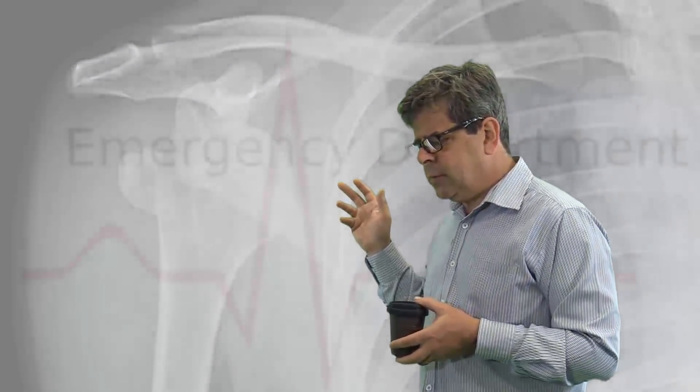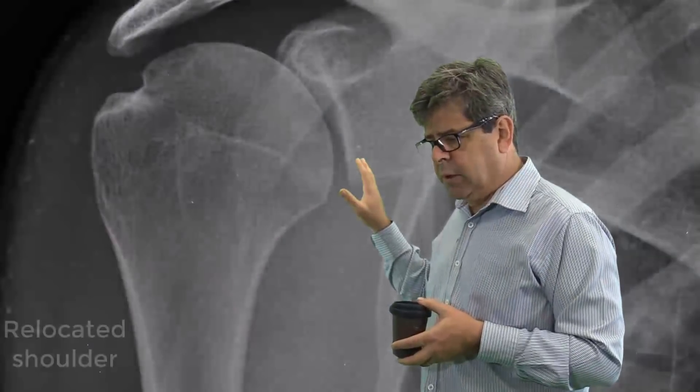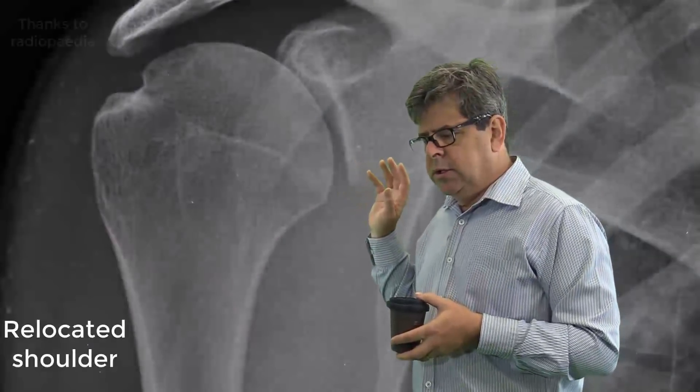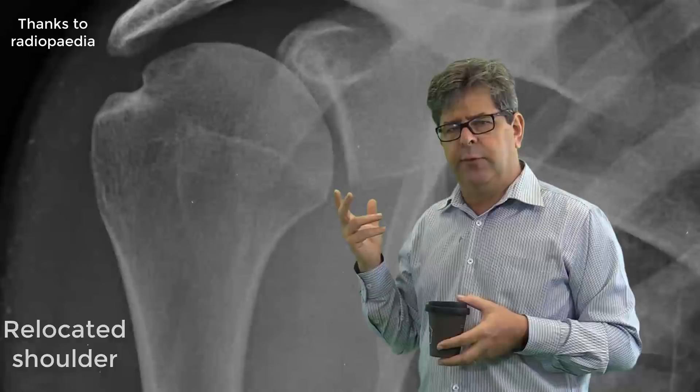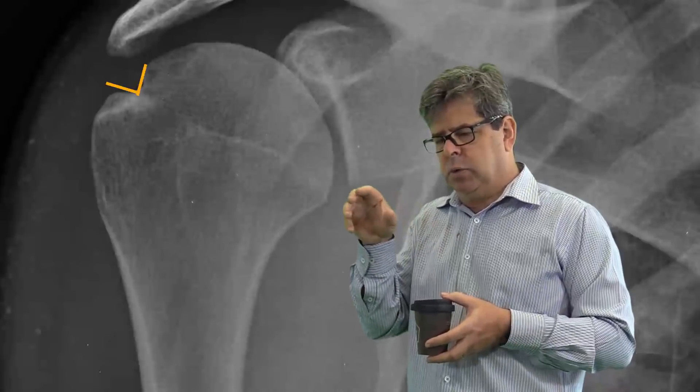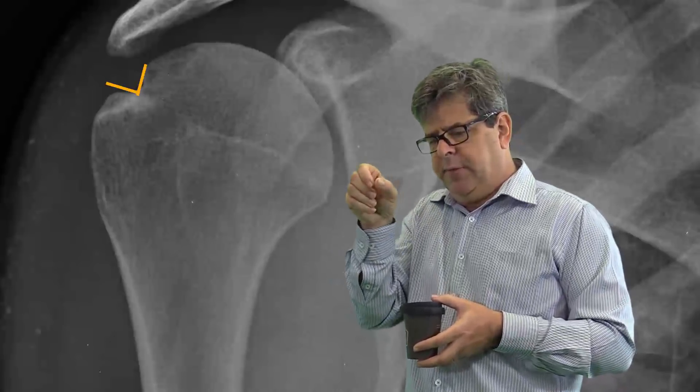While we're talking about x-rays, this is from the AP we're looking at. You can sometimes see also a Hill-Sachs deformity. As the shoulder, the head of the humerus, comes out, it whacks on the anterior aspect of the glenoid, and you can have like a wedge-shaped, a posterolateral wedge-like defect in the humeral head, and it's called a Hill-Sachs deformity.